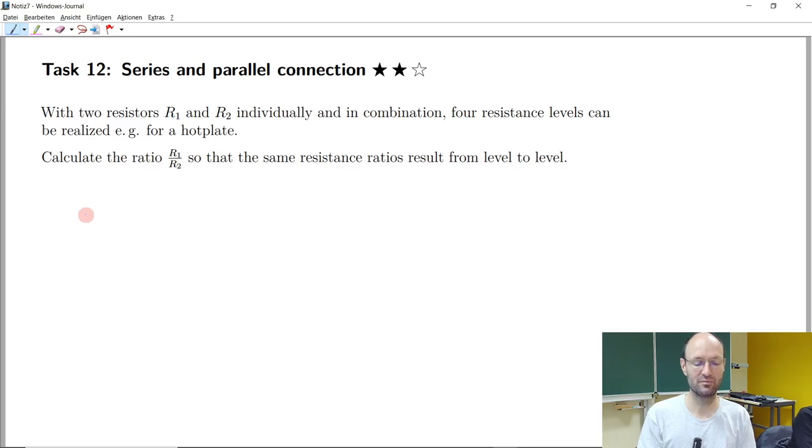So first thing that we can think of is, how could I use these two resistors individually and in combination to get four different levels? So if I write down the four levels, one, two, three, and four, what can I do?